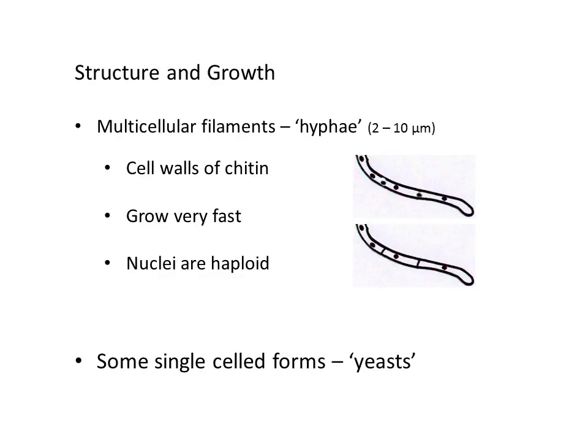This hidden fungal body is made up of thread-like filaments called hyphae, each with a diameter of only 2 to 10 micrometers. These filaments are made up of cells with haploid nuclei, and the cell walls are made of chitin. These chitinous cell walls are one piece of evidence that fungi are more closely related to animals than to plants. The thread-like hyphae are able to lengthen at a very fast rate to enable the fungus to spread rapidly within its substrate.